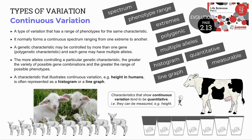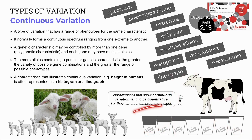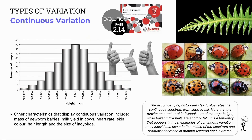The production of milk in dairy cows, for example, ranges from low volume to high volume, with most cows producing average amounts. These characteristics can be measured, so they are quantitative, and they are also affected by the environment. Other examples of continuous variation include height in humans, length of thumbs occurring in any size within a range, size of leaves, length of ladybirds, heart rate, hair length, blood pressure, and width of big toe.